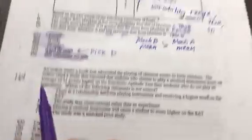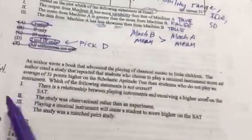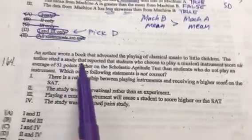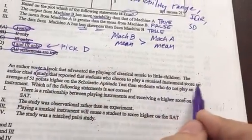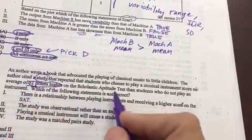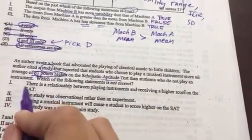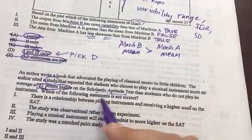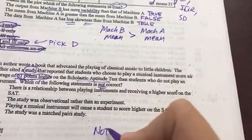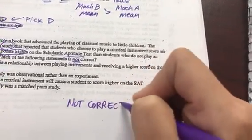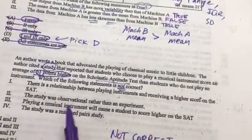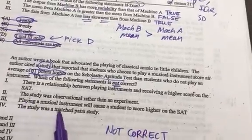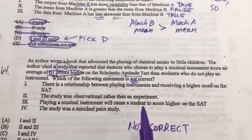Moving right along, another one of these. I call these the devil-writes-these questions—these are always tricky. The author wrote a book advocating the playing of classical music to little kids. He cited a study that reported students who play musical instruments on average scored 51 points higher on the SAT than students who did not play an instrument. Which of the following is not correct? I'm looking for not correct, and if I find a not correct, I'm going to select it.